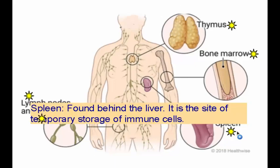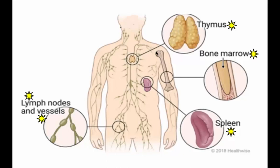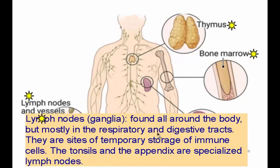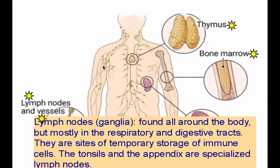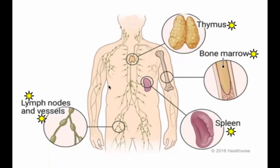The spleen is the site of temporary storage of immune cells. Once immune cells are produced and matured, they come to sit in the spleen and wait for any infection in order to fight it. The lymph nodes are also a site of storage, but what's special about them is their position all around the body, particularly around the orifices and openings where pathogens can easily enter.